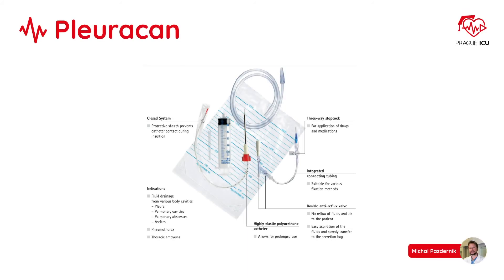Most commonly used catheters on ICU are Seldinger Technique inserted drains, or what we use in our department, the Pleuracan system. The set contains a 50 mm syringe, integrated connecting tubing, thin wall puncture needle with short bevel, and a 45 cm long highly elastic polyurethane catheter with protective sheath and closure cap at the proximal end.